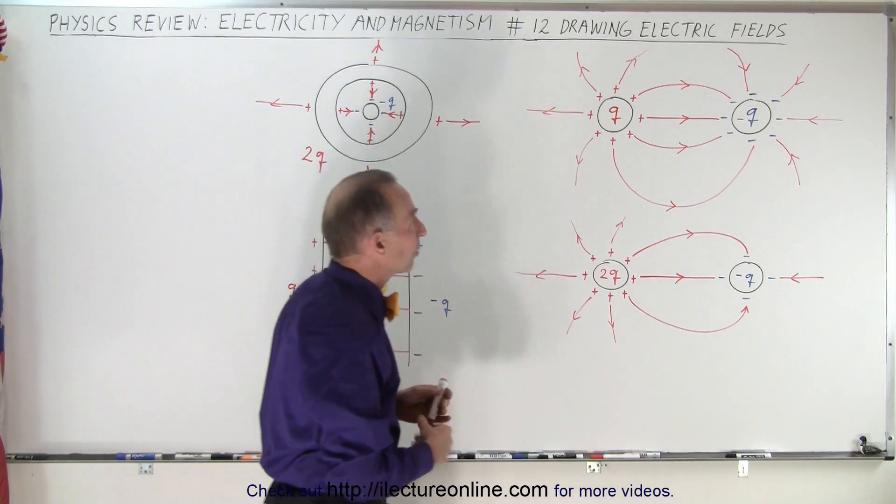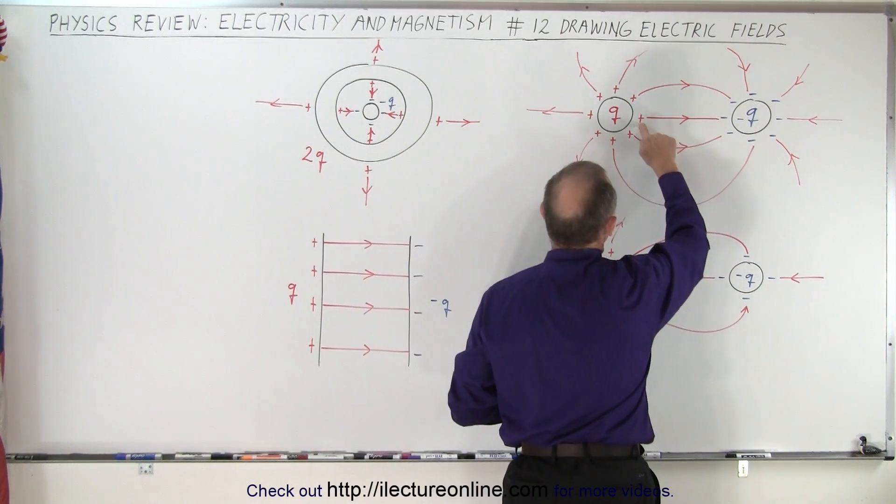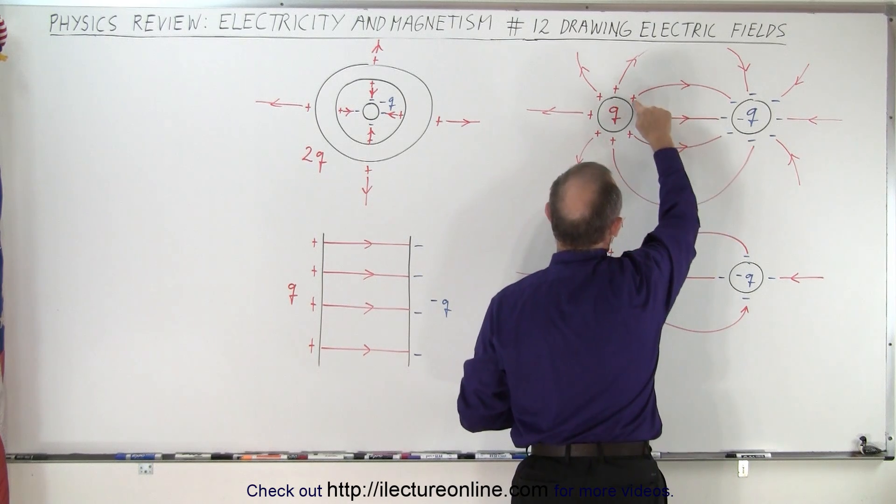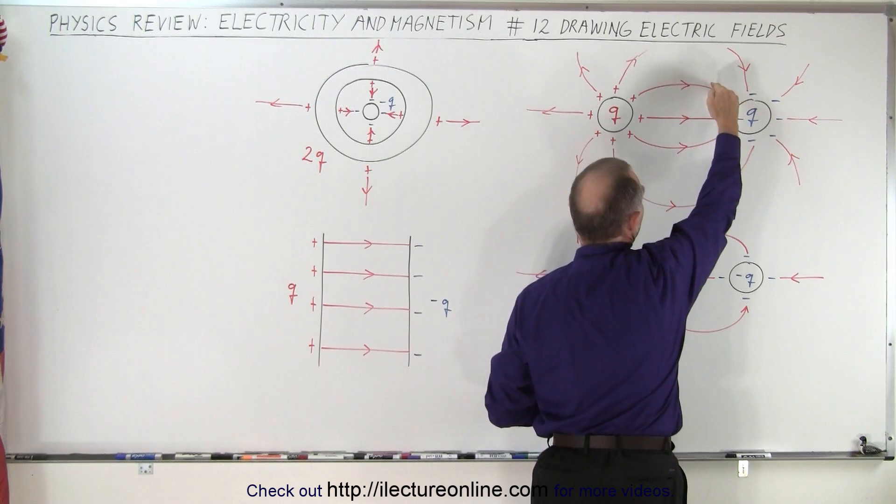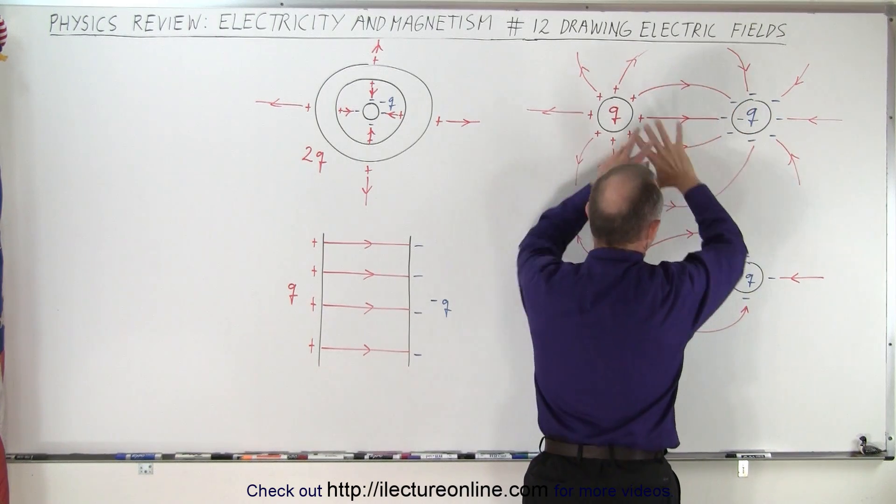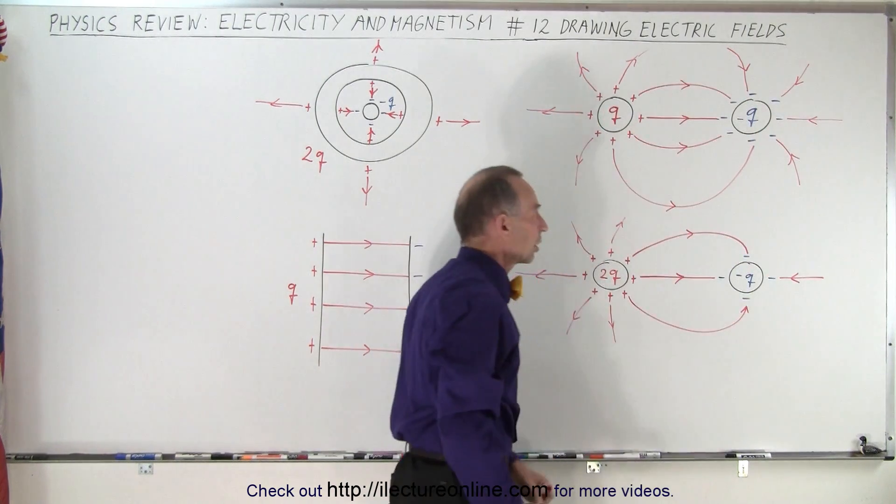Then you should draw lines. You can go one to one. There's a line going from here to here directly across. There's a line from here to here, but it emanates perpendicular to the surface, then it curves, and it enters perpendicular to the surface. So you can see that's what the arrangement will look like.